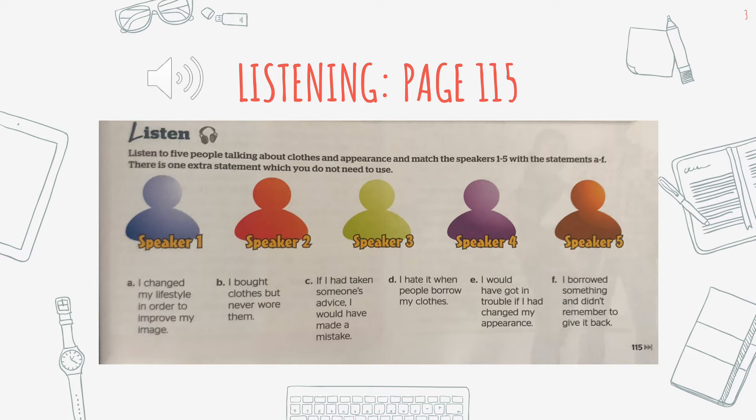Speaker three: I'd sort of realized I had a problem. A few months ago I bought a pair of jeans but I had to buy them a size bigger than usual because they didn't fit. Then a few weeks later I tried the same jeans on and they were really tight again. There was only one answer for it — I stopped eating cakes and sweets and drinking all those soft drinks which are full of sugar. I even started using my brother's treadmill. Within a few weeks I could easily fit into those jeans, but I didn't stop there. I lost lots of weight and now I look and feel like a new person. I recommend it to everyone.